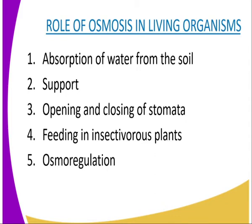We have our second role of osmosis, that is support. Water taken into cells increases cell turgidity, hence cells become firm or rigid and therefore gain support. This type of support is important in seedlings, leaves and herbaceous plants which are less woody. The plants which are less woody, for example the passion fruit, survive by the means of osmosis, because they are not able to have support on their own. They depend on other plants for support using the mechanism of osmosis.